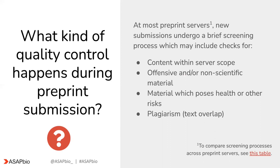Note that some servers post preprints prior to this moderation process. Either way, the screening process usually includes checks for the following: content being within the scope of the preprint server's focus; offensive and/or non-scientific material; material that poses a health or biosecurity risk; text overlap compared to other reports, usually with text overlap detection software. In some cases, this process can also include checks for data and/or code availability, and in some cases, checks for author background.